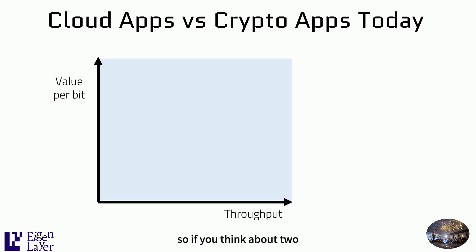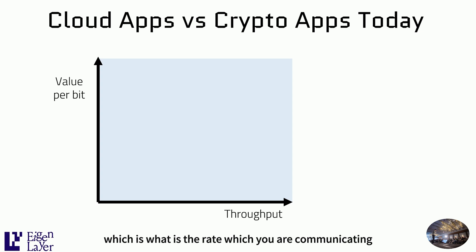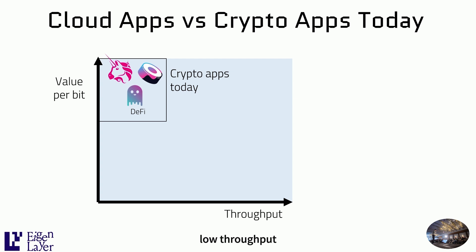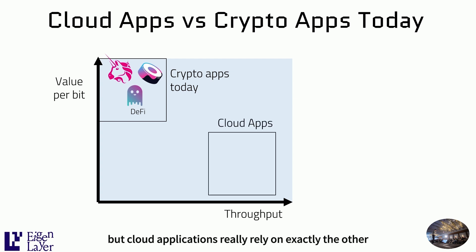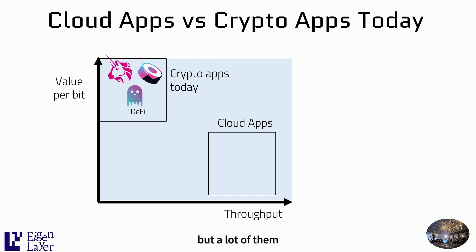If you think about two different kinds of apps, there are two fundamentally different axes: value per bit, which is how valuable the application is per bit of transaction, and throughput, which is the rate at which you are communicating. Crypto apps today are operating at high value per bit but low throughput. Cloud applications rely on exactly the other dynamic — a lot of throughput but low value per bit. Each tweet someone writes, how much value can that have? But a lot of them together add a lot of value for social networks.